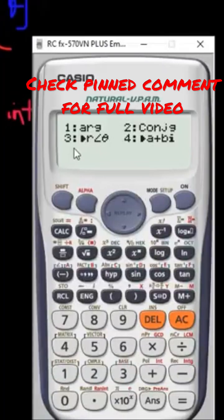So you click or choose 3. This is where you can convert the rectangular form, the complex number, into the polar form, right, just by using a calculator.